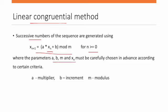We have to choose these parameters very carefully according to some criteria. 'a' is called the multiplier. 'b' is the increment. 'm' is the modulus value. So this is the given formula.